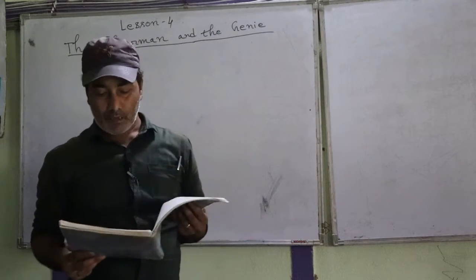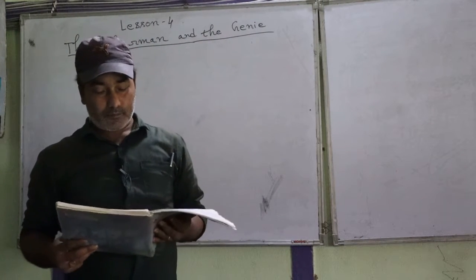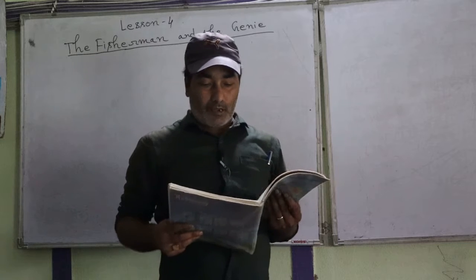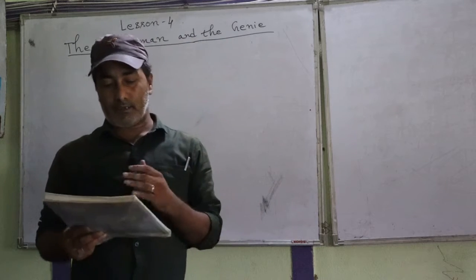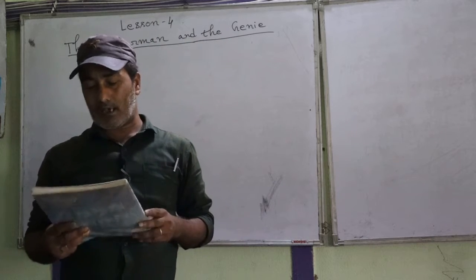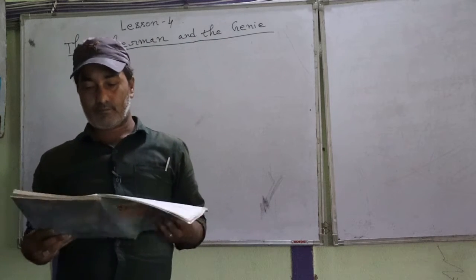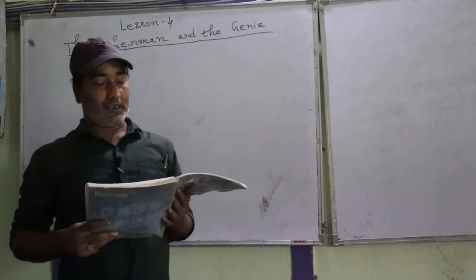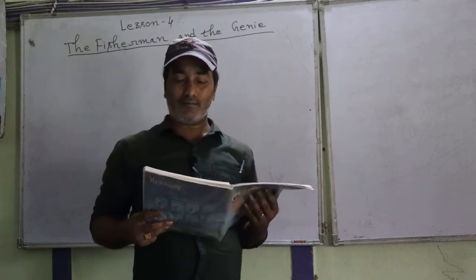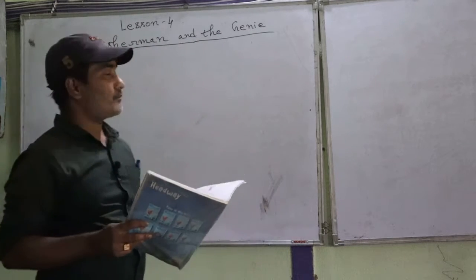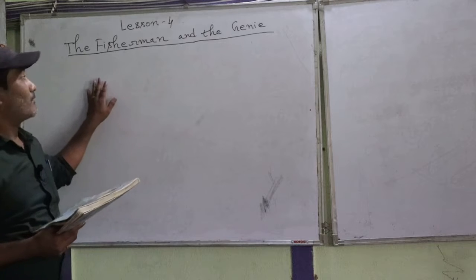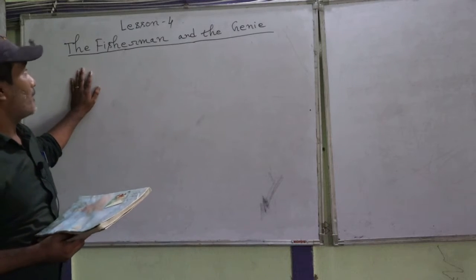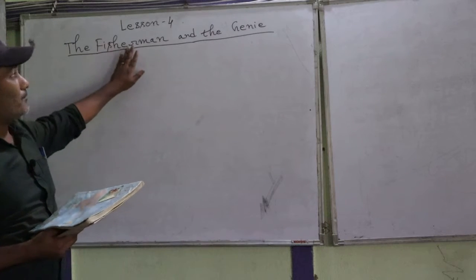Good morning students. Today I am going to teach English for class 6, that is lesson number 4. The name of the lesson is 'The Fisherman and the Genie.' In this lesson we will learn about the fisherman and the genie.